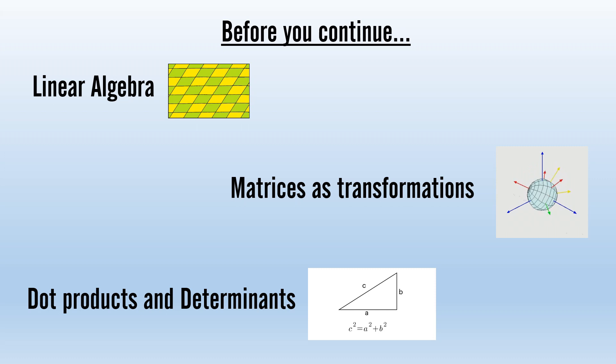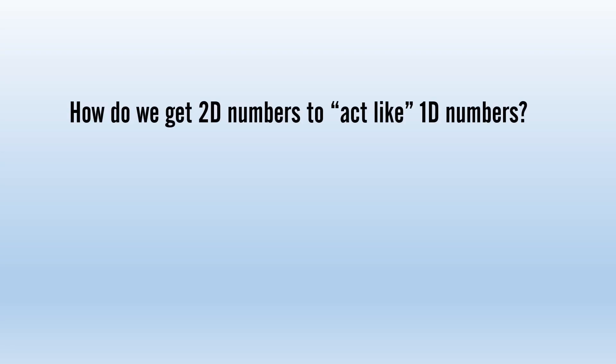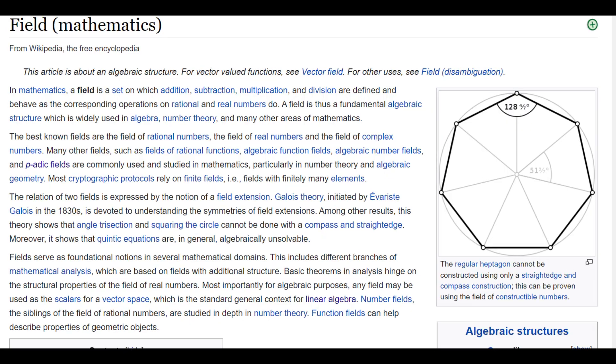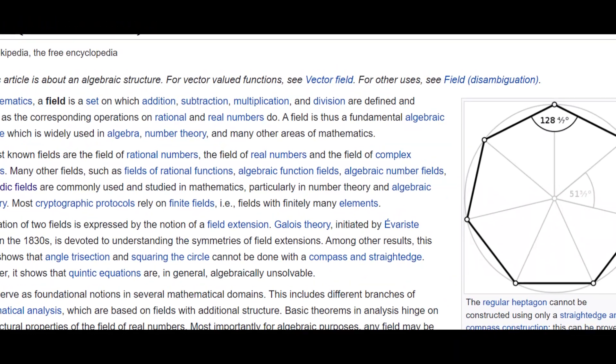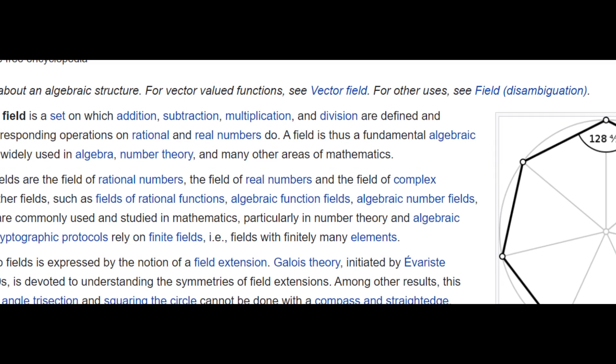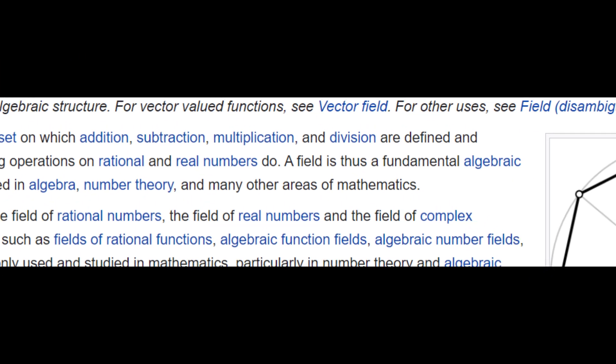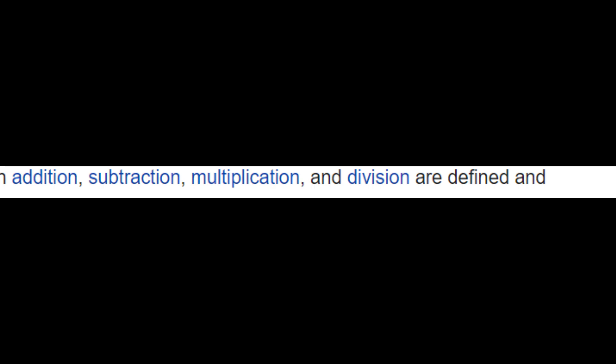If we want to form an algebraic system of two-dimensional numbers, we could ask how can we make a field of 2D numbers? All you need to know for now is that, just like the one-dimensional numbers, you can add, subtract, multiply, divide, and invert them.